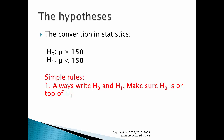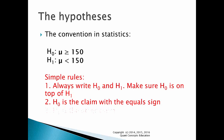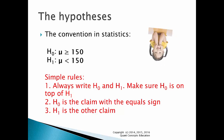Always write H0 and H1, and make sure H0 is on top of H1. H0 is the claim with the equal sign — that is, the null hypothesis. H1 is the other claim — that is, the claim without the equal sign — otherwise known as the alternate hypothesis. Surprisingly straightforward.